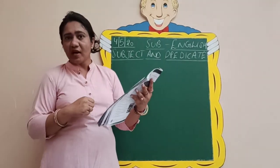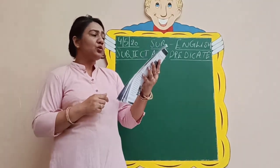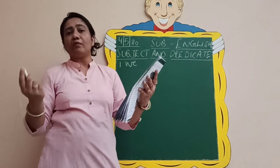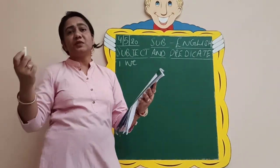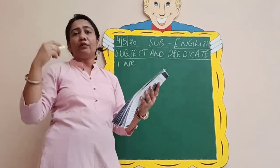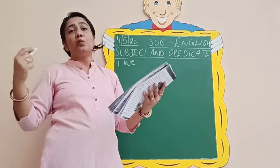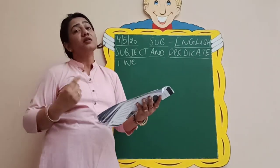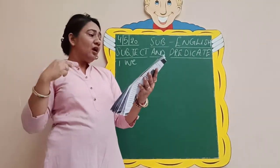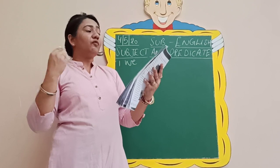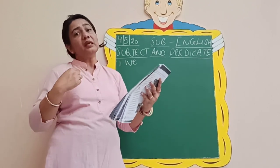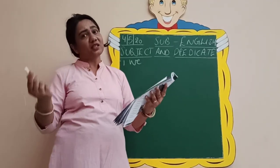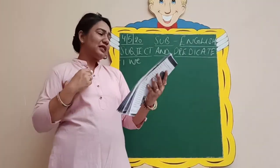First sentence: 'We cannot live without water.' The subject is 'we.' I have already told you — the subject is the doer of the action. By asking 'who?' or 'what?' you can find your subject. If we ask 'who cannot live without water?' the answer is 'we,' so your subject is 'we.' Ask yourself the question, and the answer will be your subject.